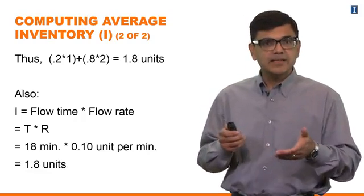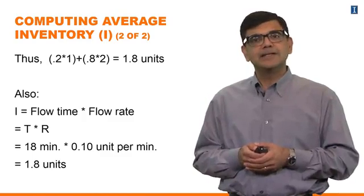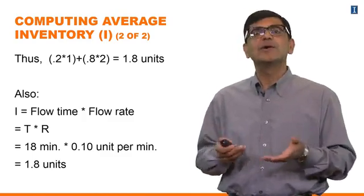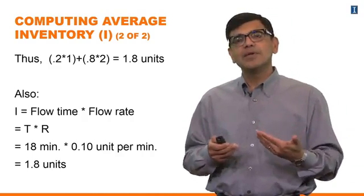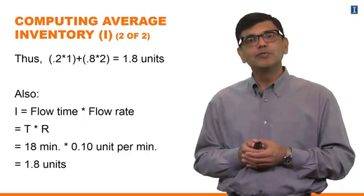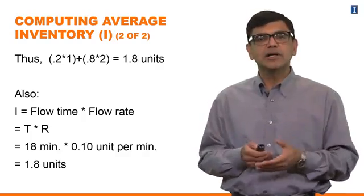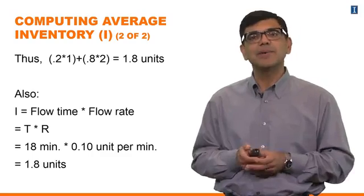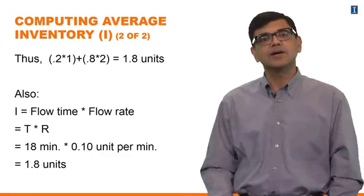This formula — this little formula, no pun intended — is what is known as Little's Law. It's known as Little's Law because John Little came up with the proof for this law. Although this was a concept known even earlier, he was the first one to provide a mathematical proof for it, and that's why it's known as Little's Law.